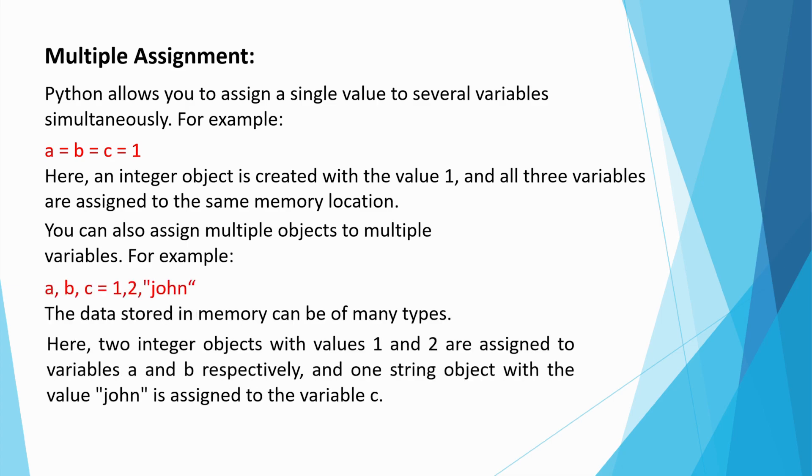The data stored in memory can be of many types. Here two integer objects with value 1 and 2 are assigned to variables a and b, and one string object with the value john is assigned to variable c.